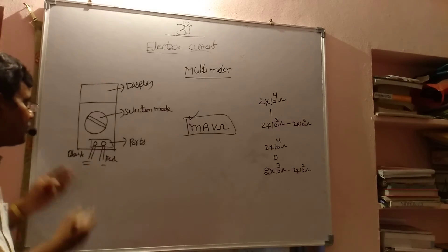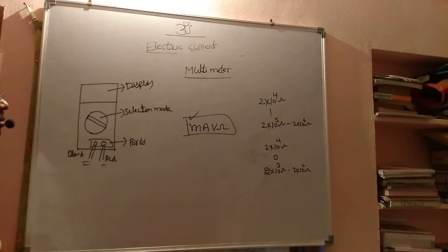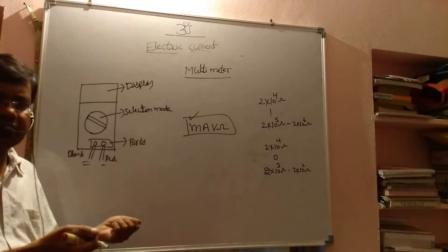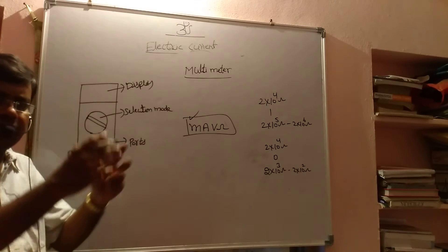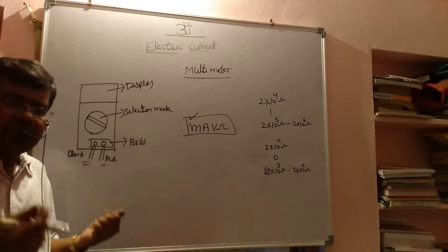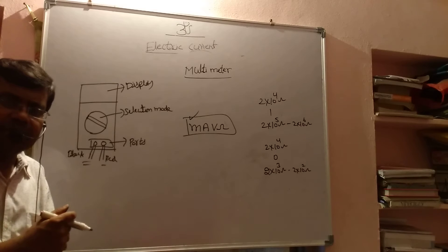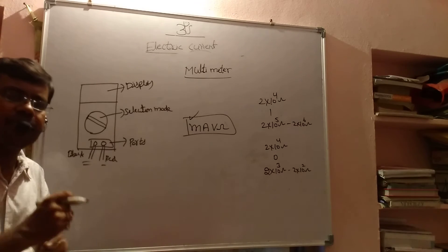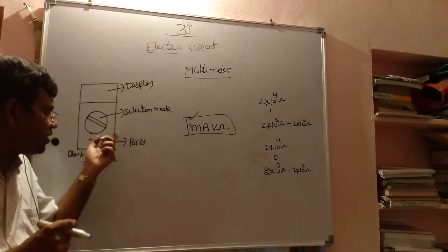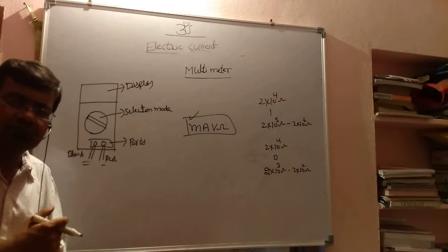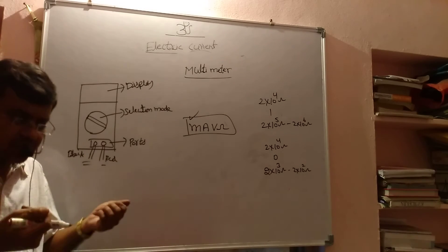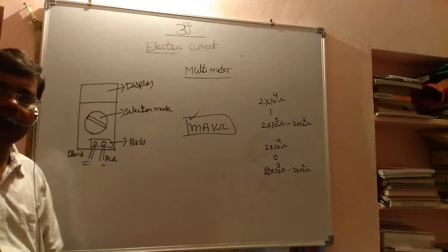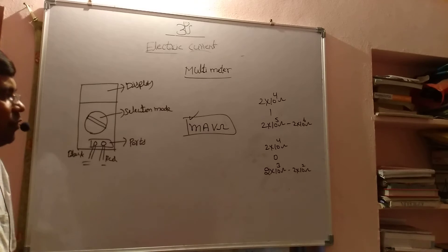So by using this multimeter we are connecting in between two points. If you give a circuit where current is not flowing — for example, between point A and point B current is not flowing — there you keep the probes and adjust. If you want to find the electric current, adjust for current. If you want to find the resistance, adjust ohm on the port and selection mode also to ohm.